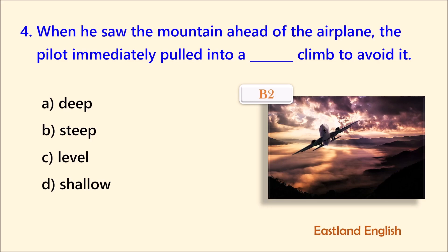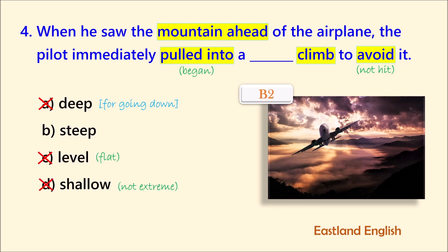Our first context clue are the words mountain ahead. There is danger for this pilot and the pilot must pull into or begin some kind of evasive action. Climb is the noun for going up. Going up is the only way to not hit a mountain. One of the least likely choices is C, level, as there would be no action required to go flat. We can cut A because we use the word deep for going down, not up. Although shallow can be used for either diving or climbing, a shallow angle is not an extreme angle. The correct adjective is steep, which we use for going up very quickly. When he saw the mountain ahead of the airplane, the pilot immediately pulled into a steep climb to avoid it.